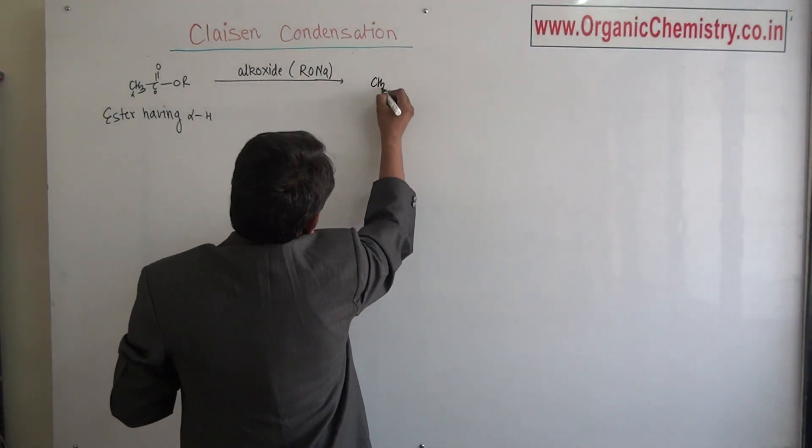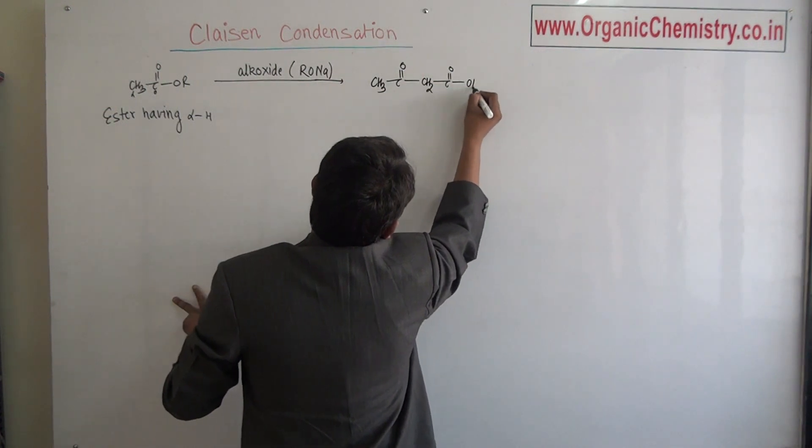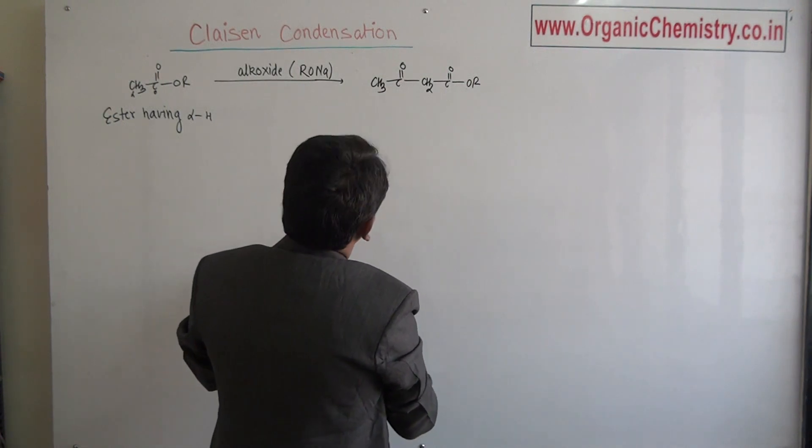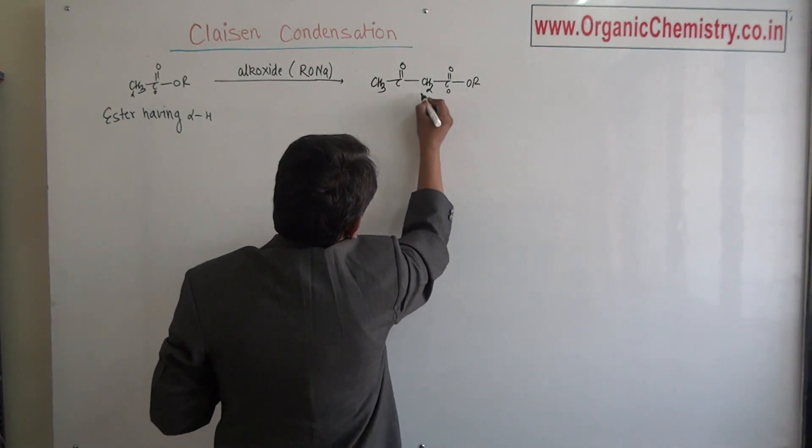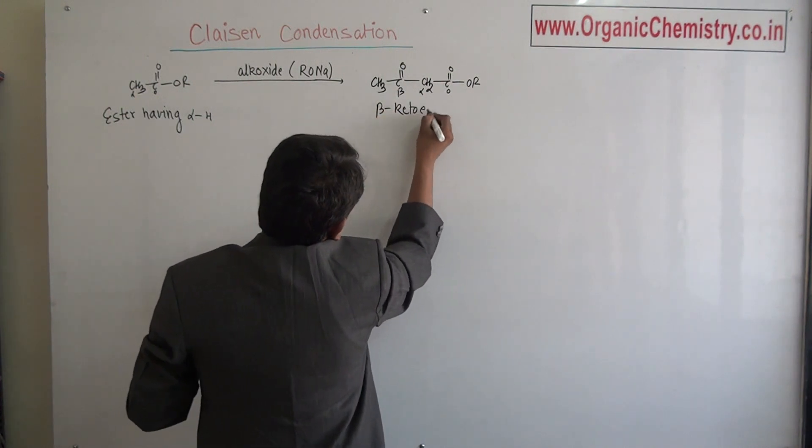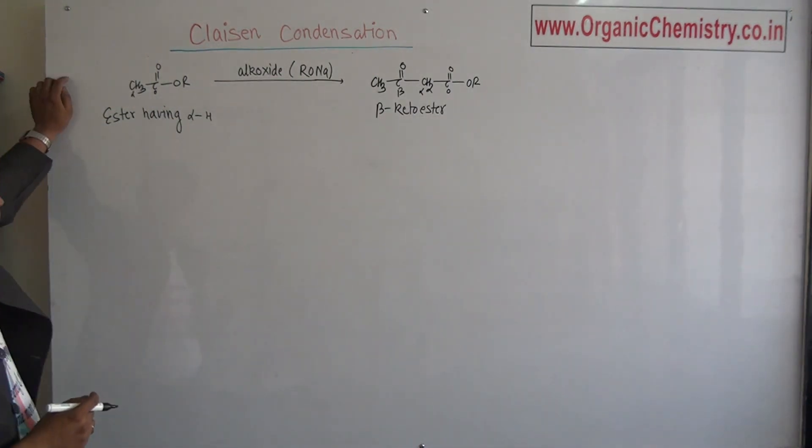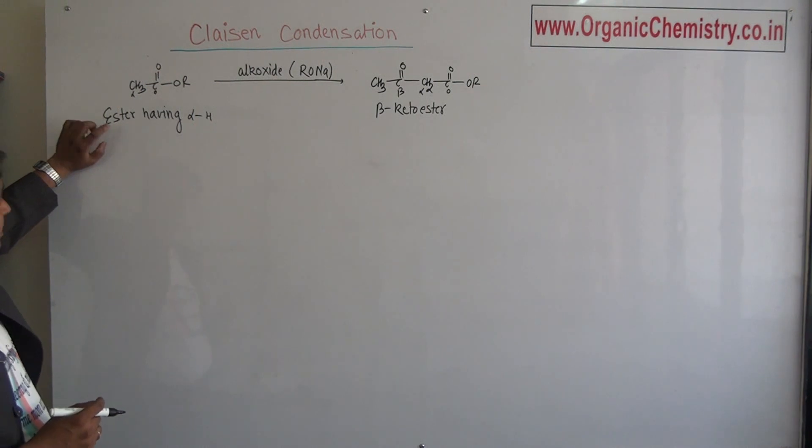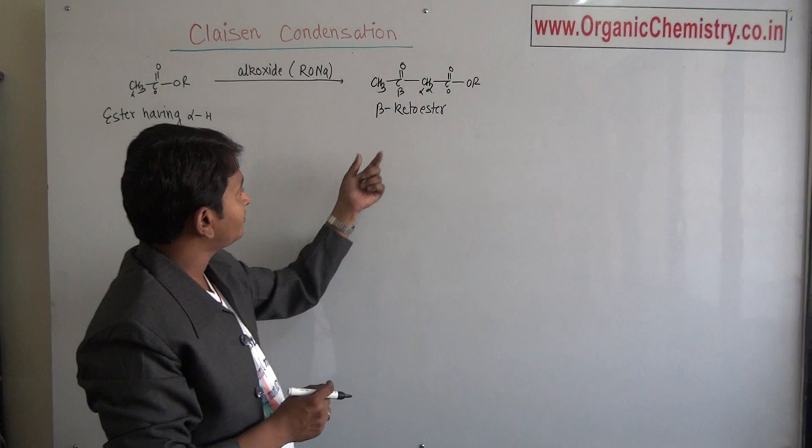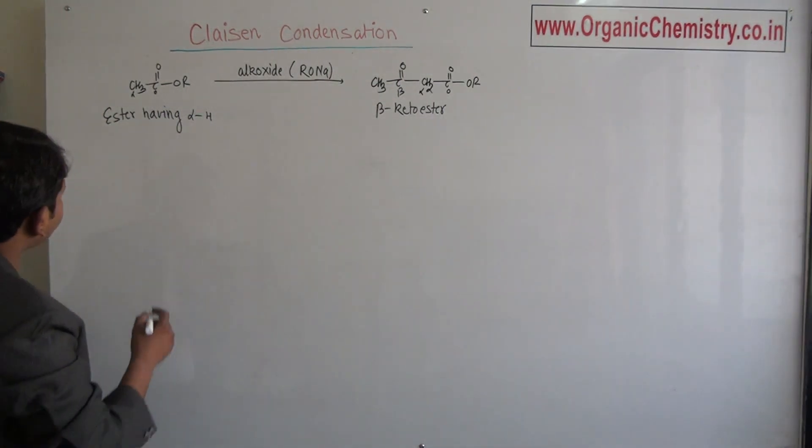Gave beta-keto ester. This is zero. This particular compound is zero, alpha, beta. That is beta-keto ester. So the Claisen condensation is that one in which ester that is having alpha hydrogen on treatment with alkoxide will give beta-keto ester. This feature is called as Claisen condensation. When we carefully analyze the mechanism...